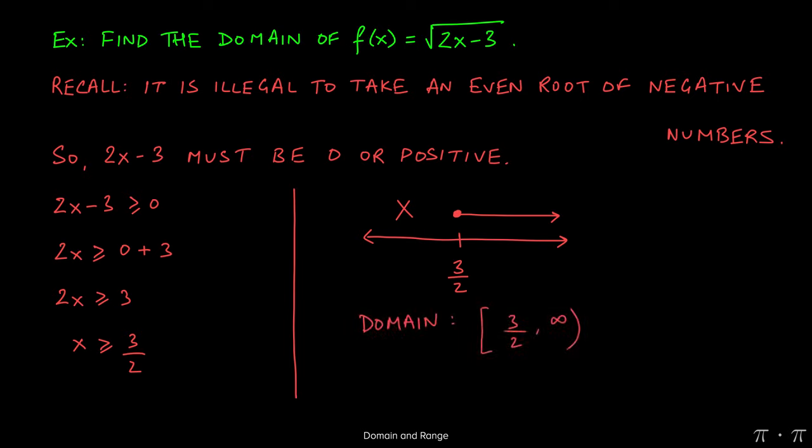So our interval starts with 3 halves. We put a square bracket here because 3 halves is included in the domain, and then we go all the way to infinity, which gets parentheses. And that's it.